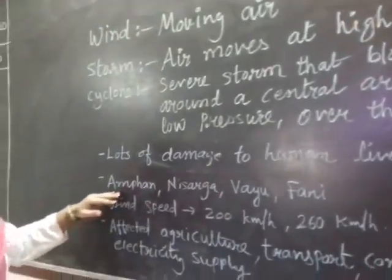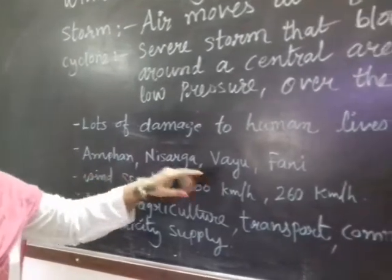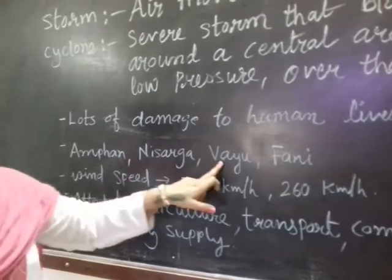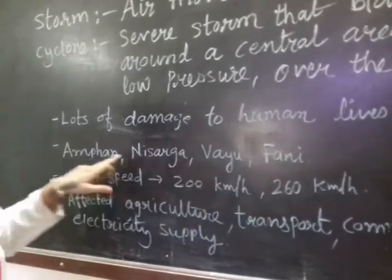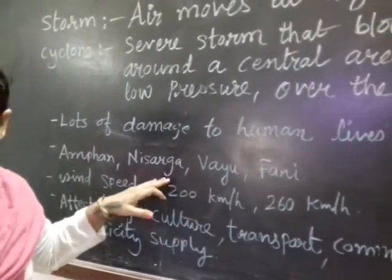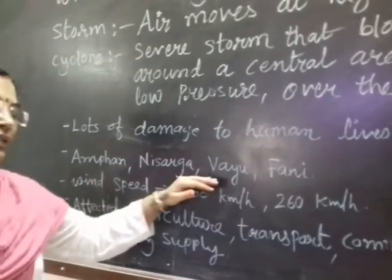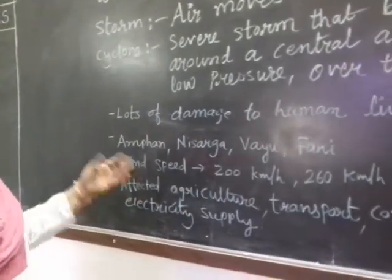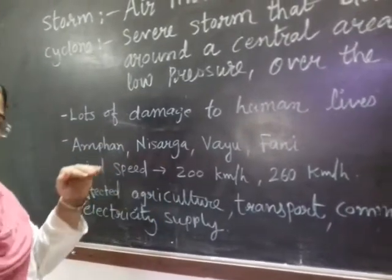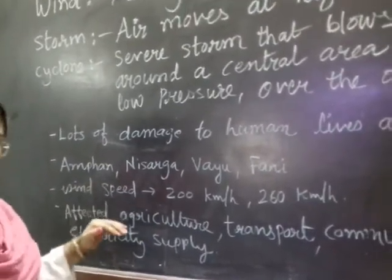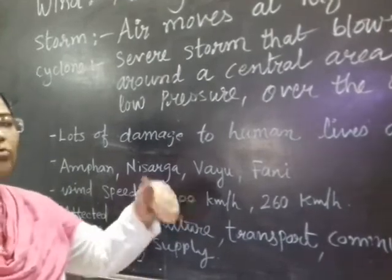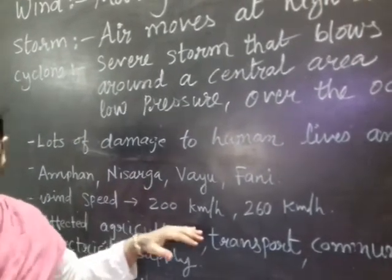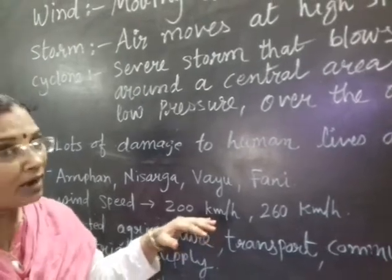Here are some names of cyclones I have written. You might have heard of them: M1, Nisarga, Vaayu, Phanik — these are all names of different cyclones. Practically, they have all hit the coastal areas of India. Generally, cyclone wind speed can be as high as 400 km per hour.